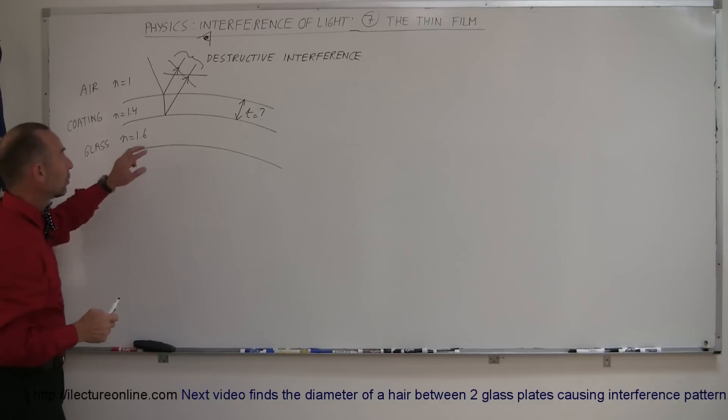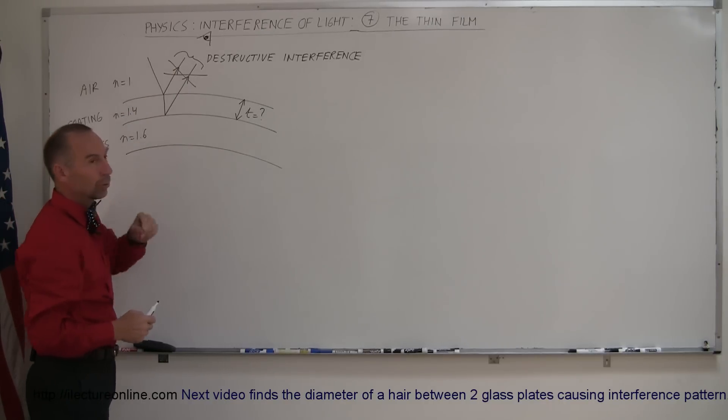In order to do that we know that the phase difference between these two must be equal to half a wavelength, because if there's half a wavelength phase difference, then they will destructively interfere with each other.